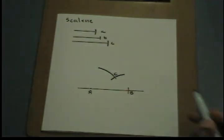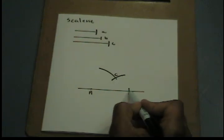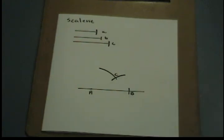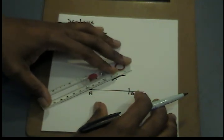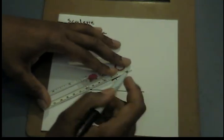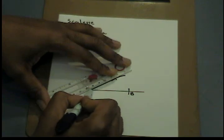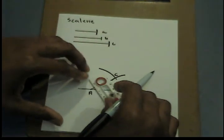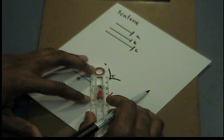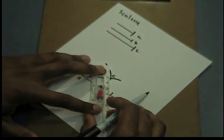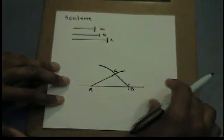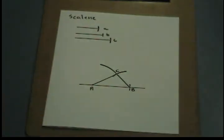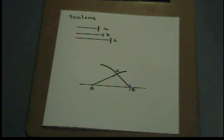I'm going to draw a line from A to C and from B to C. Now we have constructed a scalene triangle.